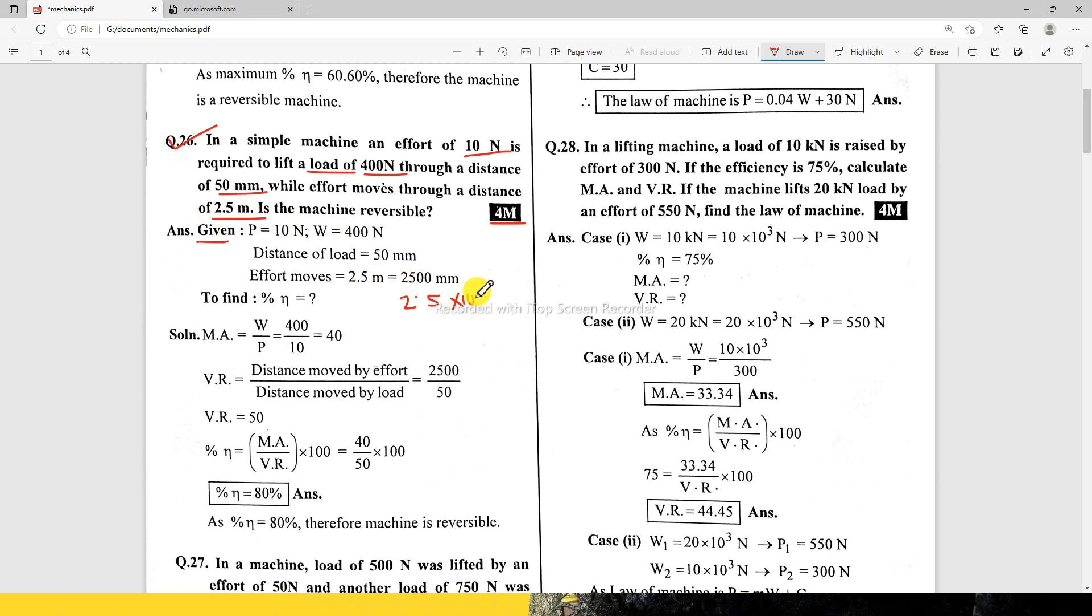Distance moved by effort equals 2500 mm, which is 2.5 meters times 10 raised to power minus 3. So efficiency, you can see it again friends. So efficiency, MA equals W by P.